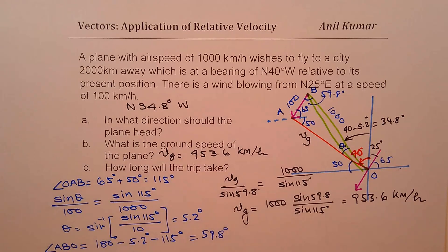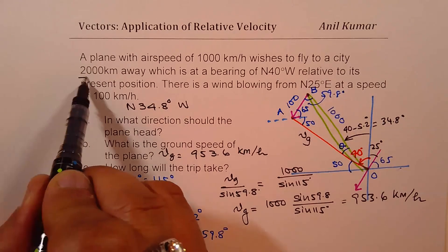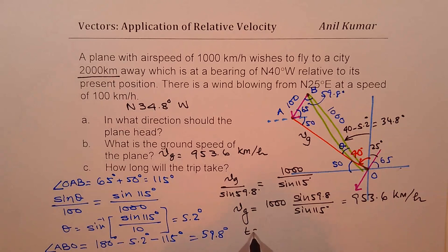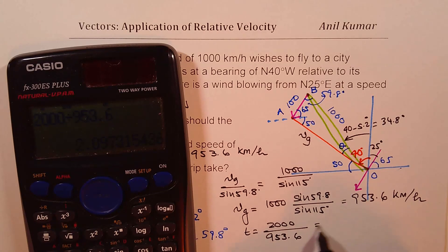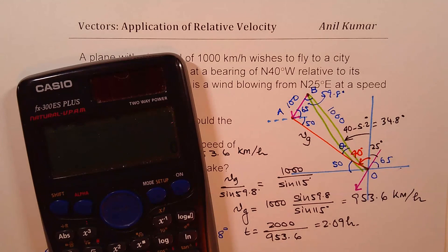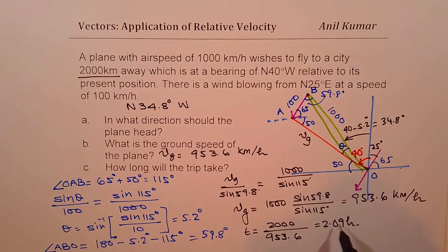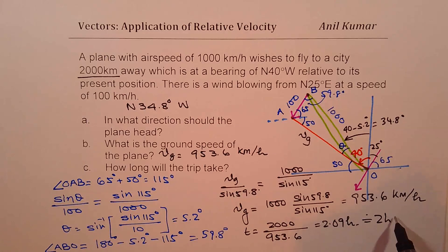Now part C is, how long will the trip take? Now since the city is 2000 kilometers away, so time taken will be distance of 2000 kilometers divided by 953.6, and that gives us 2.09 hours. So we can always convert that to 0.09 times 60 is approximately 5.4 hours. So we could say this approximately is 2 hours and 5 or 6 minutes.